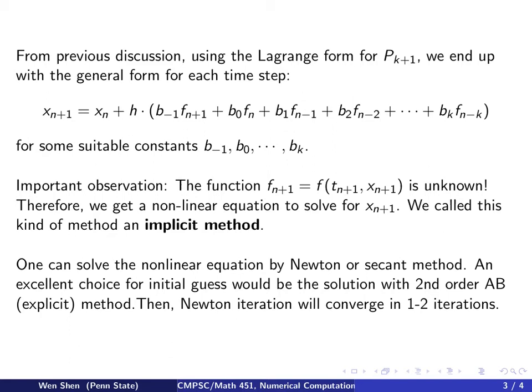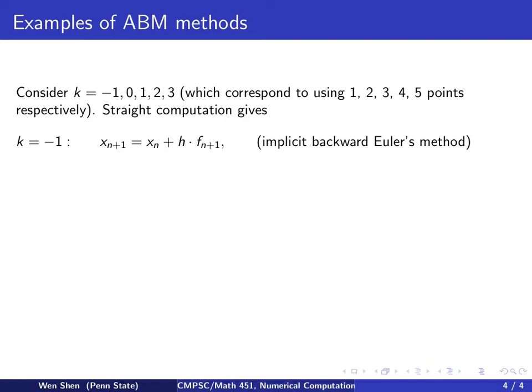Now, let's take a look at a couple of examples of this Adam-Bashforth-Moulton method. For the lowest orders, for smaller values of k,